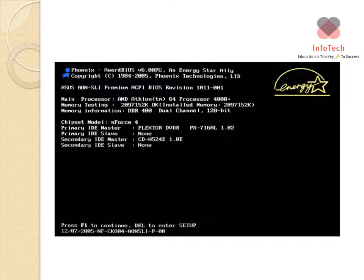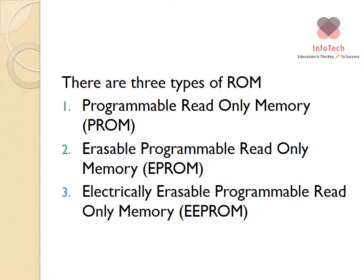The BIOS screen is normally accessible by pressing F2. You have three types of ROM: the Programmable Read-Only Memory, which is your PROM; the Electrically Programmable Read-Only Memory, which is your EPROM; and the Electrically Erasable Programmable Read-Only Memory, which is your EEPROM. Now let us examine each of them.